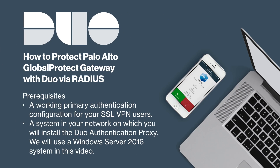Before setting up this Duo integration with Palo Alto, you must have a working primary authentication configuration for your SSL VPN users, such as LDAP authentication to Active Directory. To integrate Duo with your Palo Alto VPN, you will need to install a local proxy service on a machine within your network. You should locate or set up a system on which you will install the Duo authentication proxy. The proxy supports Windows and Linux systems.